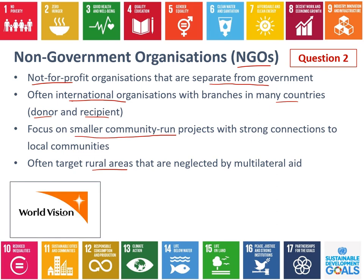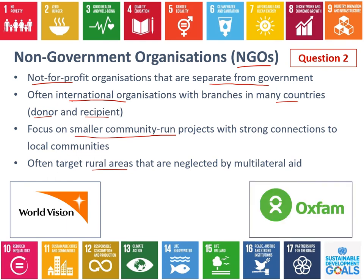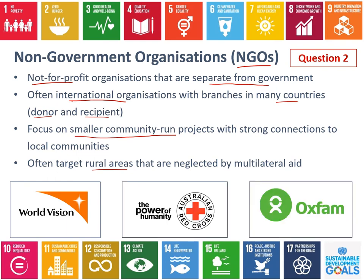We're going to look at three particular organisations: World Vision, the Australian Red Cross, which is a branch of the International Red Cross, and Oxfam. You've probably heard of all of these — they tend to have quite a lot of marketing and ads on TV. Just go in and answer question two, giving an overview of what non-government organisations are and maybe how they're different to multilateral aid.